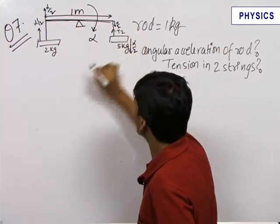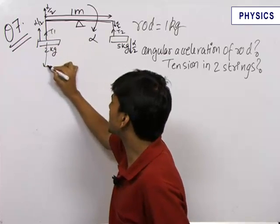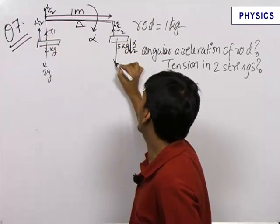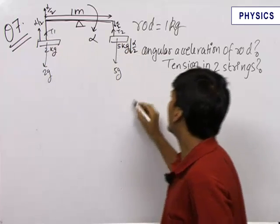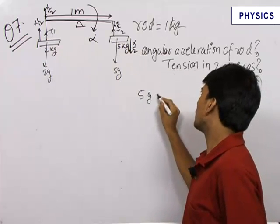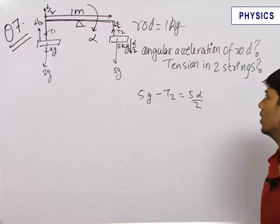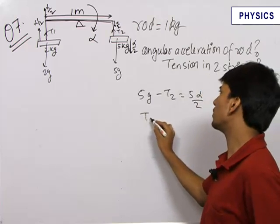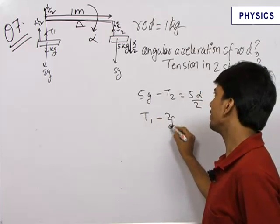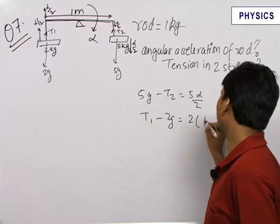Let this be T2 and let this be T1. So we get the equations as 5g minus T2 equals 5 alpha by 2. The other equation we get is T1 minus 2g equals 2 into alpha by 2.